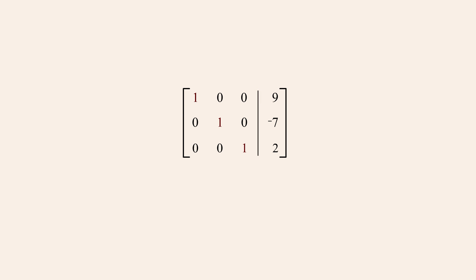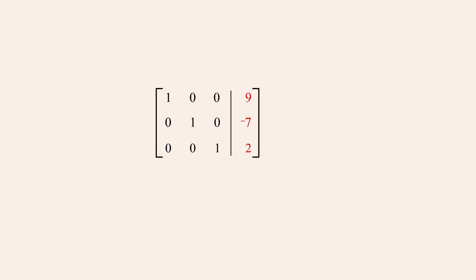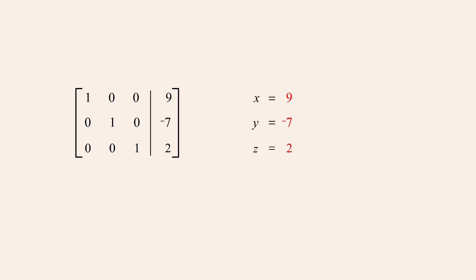Now that all the leading entries are 1 and the rest of the coefficient entries are zeros, this matrix is in reduced row echelon form. As we saw earlier in this lecture, a matrix in this form where the leading entries all fall on the main diagonal corresponds to a system of equations with a single unique solution, and the system represented by this matrix has the solution 9, negative 7, 2.